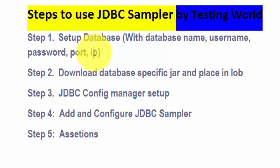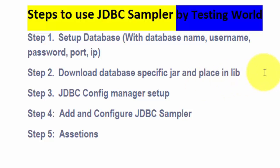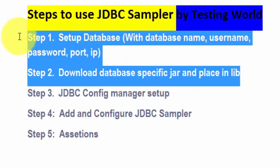Then we need to download the database-specific JAR and place it into the lib folder of JMeter. That's the second step, and once these two steps are done we can go ahead and set up the JDBC Sampler.